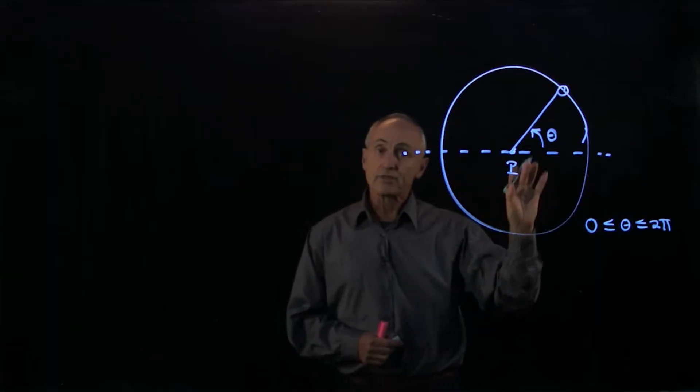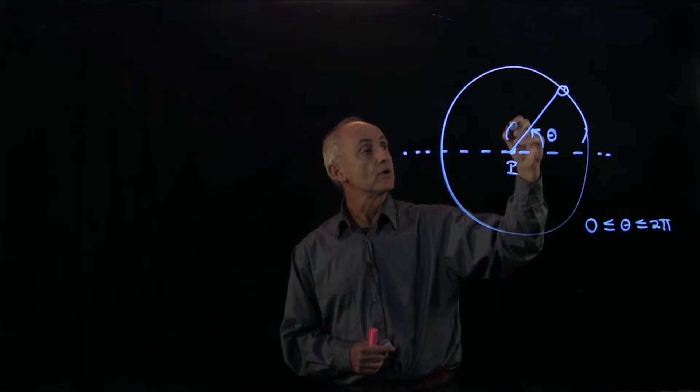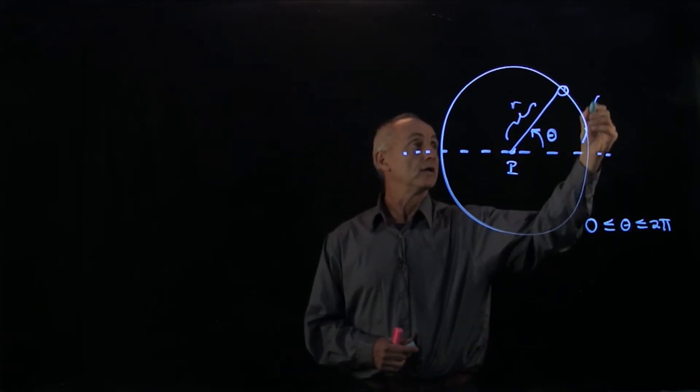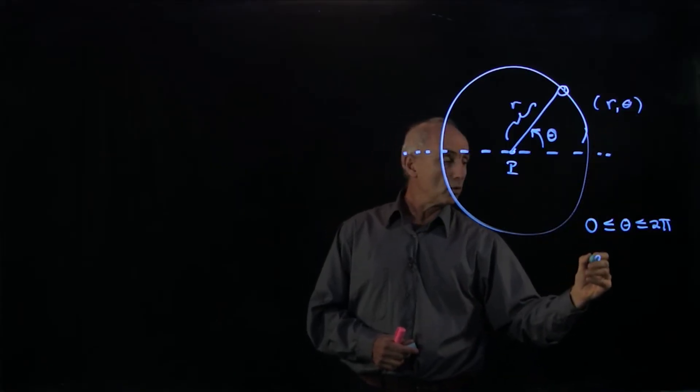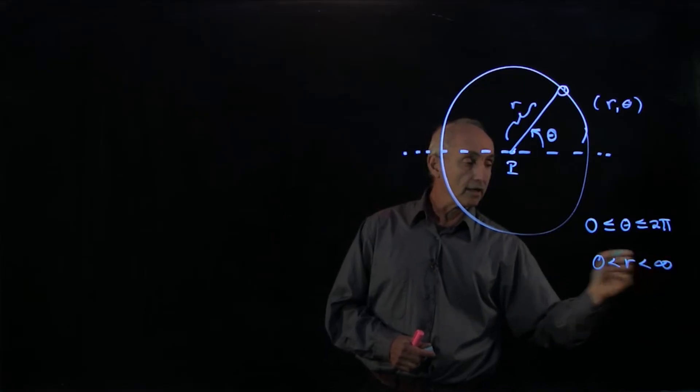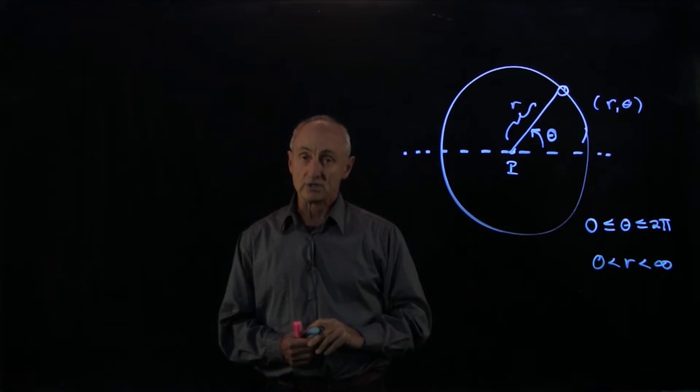Along with the reference angle, we have a distance from the central point, which we'll refer to as r. The coordinates of our point are r and theta. The variable r is always greater than 0 and can go to infinity. This is our polar coordinate system.